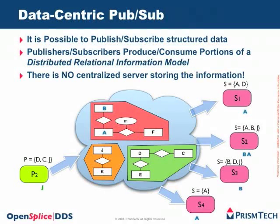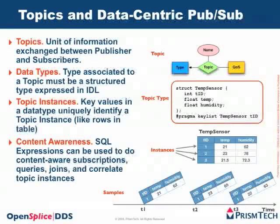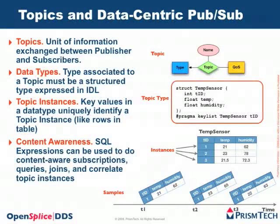Now if P2 publishes at J, this is distributed to the many interested parties — same for D. So how can we define the details of the information exchange in the system? DDS provides the concept of a topic. A topic is the unit of information that you can exchange between a publisher and a subscriber. A topic is an association between a type, a name and quality of service settings.